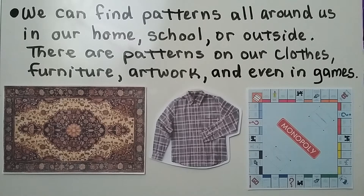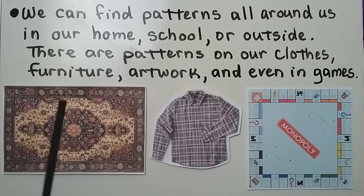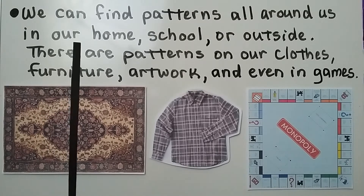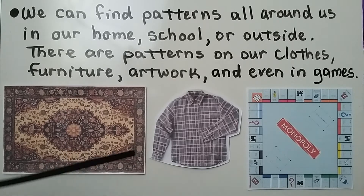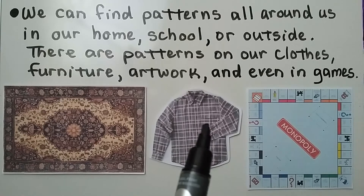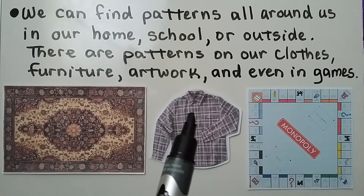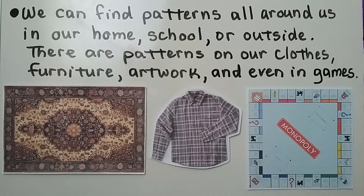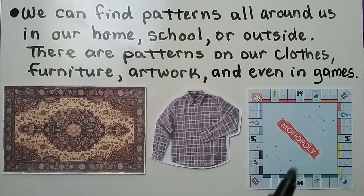We can find patterns all around us — in our home, school, or outside — in clothes, furniture, artwork, and games. A rug can show a repeating pattern and even has line symmetry; both sides match, including horizontal line symmetry. A plaid shirt has a pattern of white, dark brown, white stripes. Even a board game can show a repeating pattern, like a railroad in the middle repeated throughout.